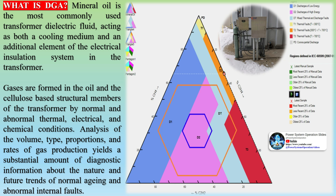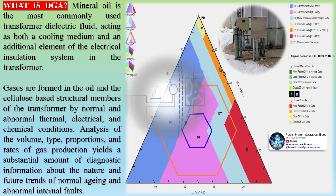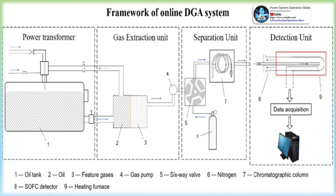Overall, transformer DGA technologies are crucial for maintaining the health and longevity of transformers, and for preventing failures that could lead to costly downtime.